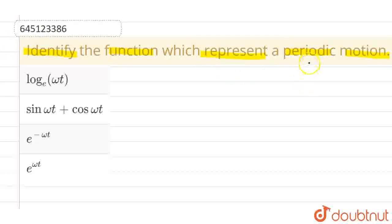What exactly we mean by periodic motion? A periodic motion is the one which repeats itself after a fixed period of time. Okay, now...